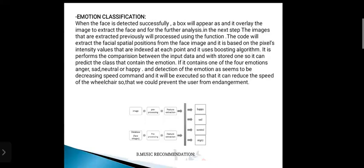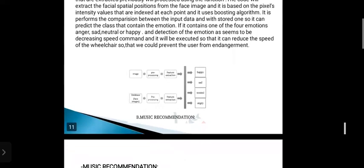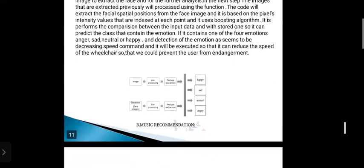So it can predict the class that contains the emotion. If it contains one of the four emotions — anger, sad, neutral, or happy — and detection of the emotion is decreasing, it will execute a speed command so that it can reduce the speed of the wheelchair to prevent the user from endangerment. And this is the music recommendation image.